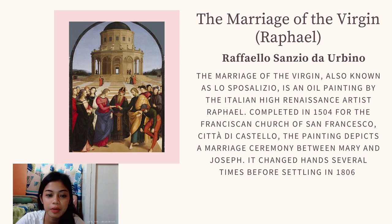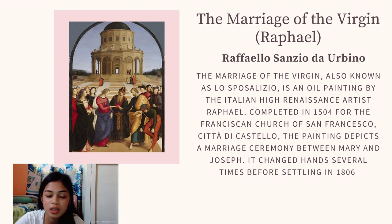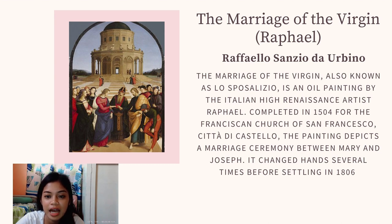Much painting of the Renaissance period was commissioned by the Church or the Catholic Church. An example is the Marriage of the Virgin by Raphael, also known as Lo Sposalizio. It is an oil painting by the Italian High Renaissance artist Raphael, completed in 1504 for the Franciscan Church of San Francesco. The painting depicts a marriage ceremony between Mary and Joseph, and has changed hands several times before settling in 1806 at the Pinacoteca di Brera.